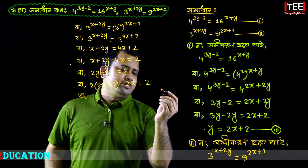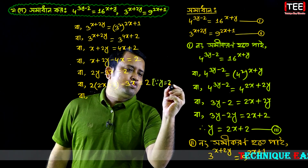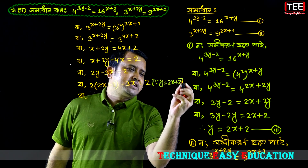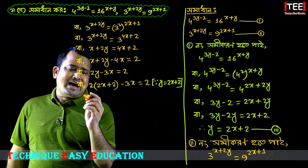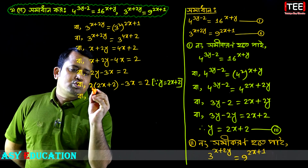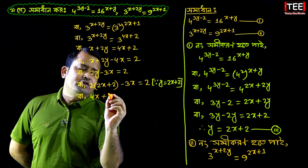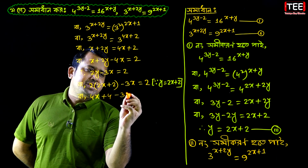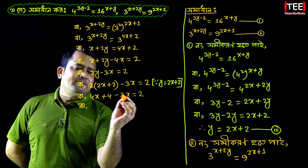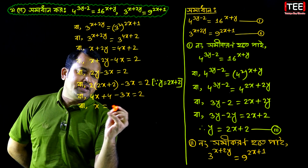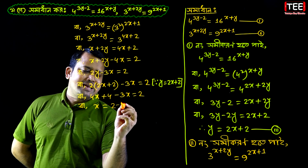See the bracket — we are going to make the same homogeneous bracket here. So 2x goes to 4x plus 2, and 4 minus 3x equal to 2. So x goes to 2, 4 is plus.